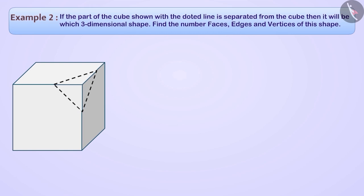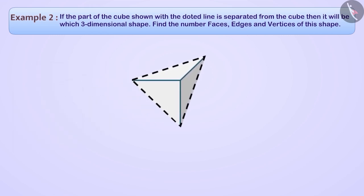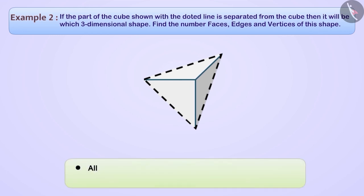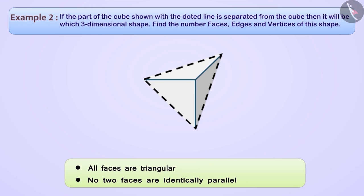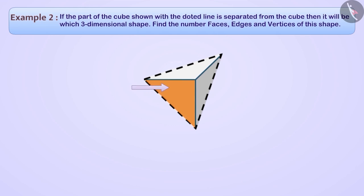If you separate the part of the given cube shown using the dotted line, it will look like this. If we look here, all the faces are triangular, but no two faces are identically parallel. That is, this shape cannot be a prism. If we consider one of the triangular faces as base, then all the remaining faces are triangular. So we can say that this is a pyramid. Since the base is triangular, we call this pyramid a triangular pyramid.